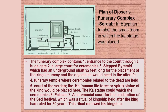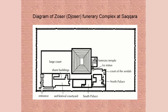The Ka statue in a complex like this is situated so he can watch the ceremonies. Periodically there would be festivals to honor the Ka of the deceased. Every 30 years they would come and have a festival for the renewal of the kingship — renewing his kingship every 30 years — and if it happened to be a different king, the spirit would just live on.